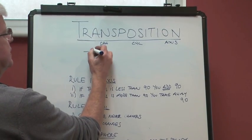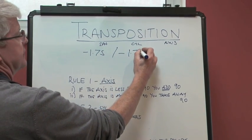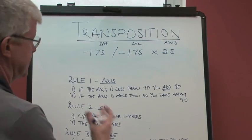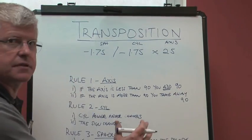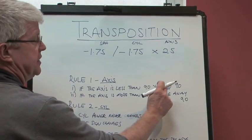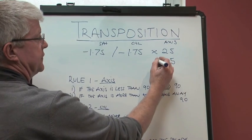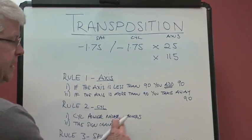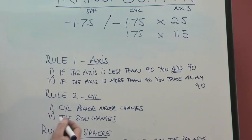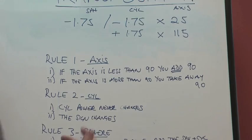Let's say we've got a minus 1.75, minus 1.75, axis 25. And we want to transpose that. So let's just follow these simple rules, and then we'll be able to do it very simply. If the axis is less than 90, you add 90. So we add 90 to that, and we end up with 115. The cylinder power never changes. So we know that that's a 1.75. The sign does change, so we know that that's a plus. So we're already halfway there.